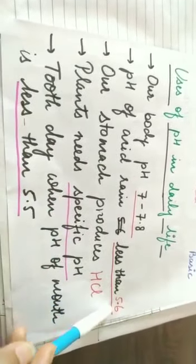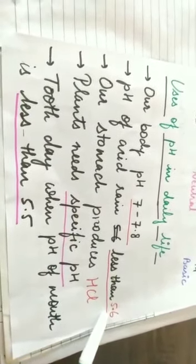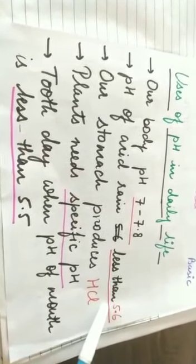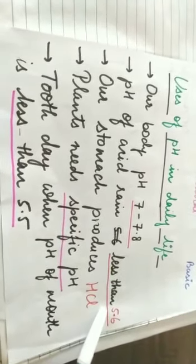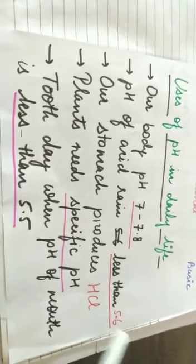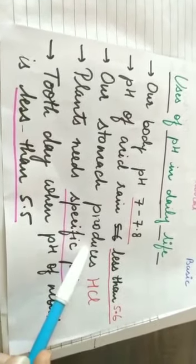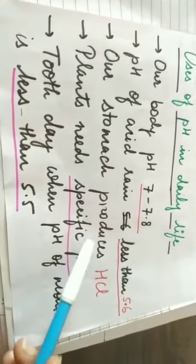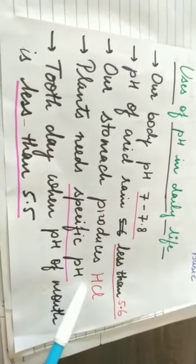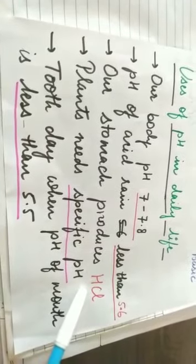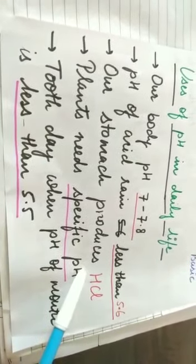In our stomach, it produces HCl. You already know for digestion of our food, our stomach produces HCl. HCl is an acid, so the pH of our stomach is less.